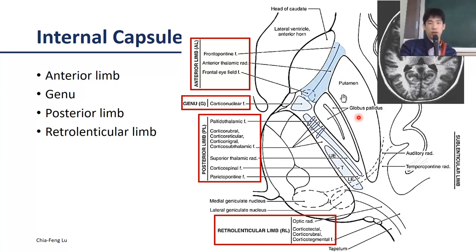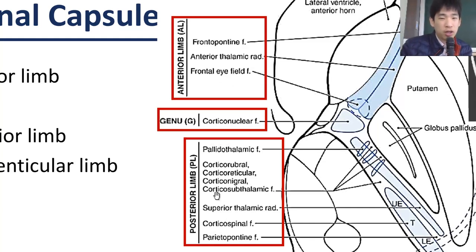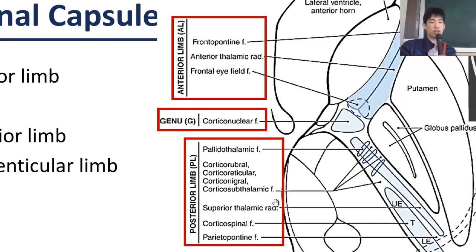Looking at the coronal slice, you can try to delineate the boundary of the internal capsule on T1-weighted imaging. The anterior limb is critical for the frontal eye field. When reading the different fiber names, remember that fiber names are always named after the regions they interconnect — for example, frontal pontine fibers interconnect the frontal lobe and the pons region.